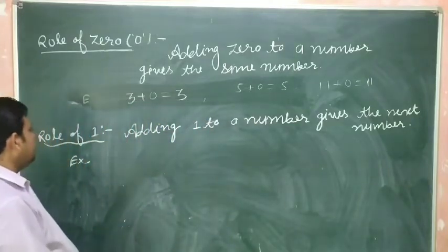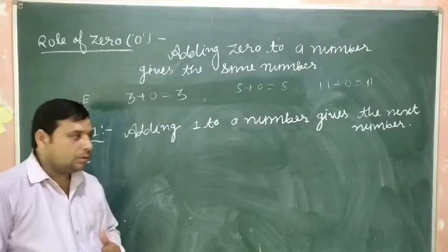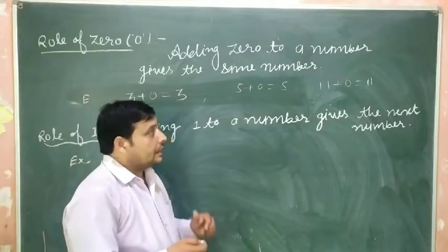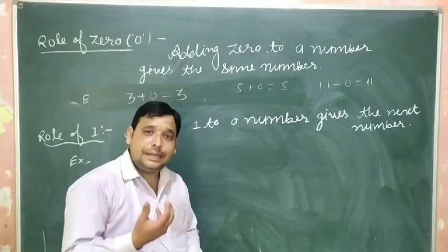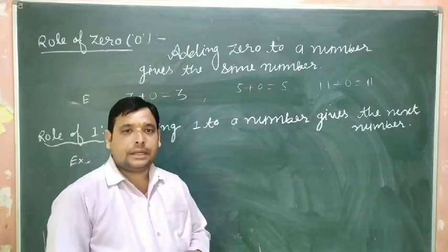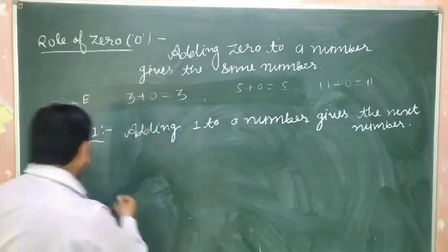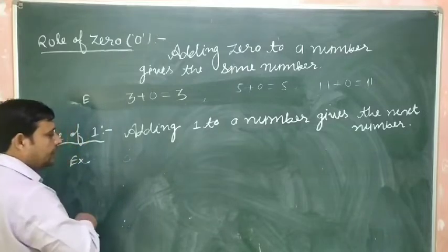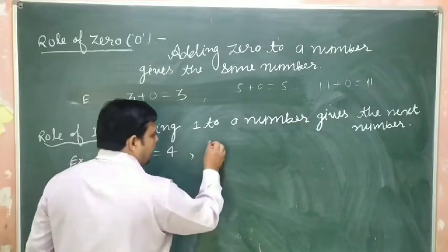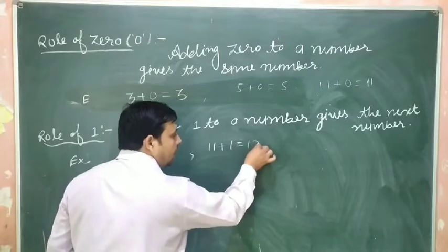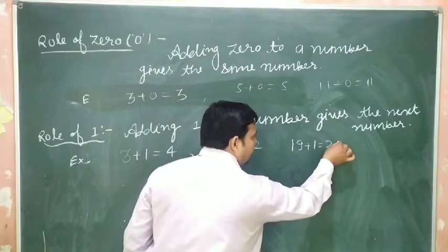Clear, students. Role of one in addition: when we add one to a number, it gives the next number. For example, three plus one equals four. Another example: eleven plus one equals twelve. Another example: nineteen plus one equals twenty.